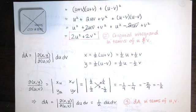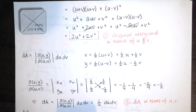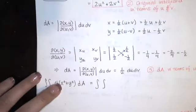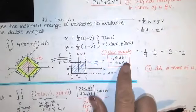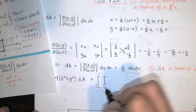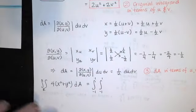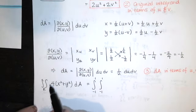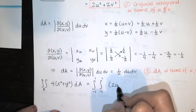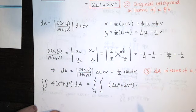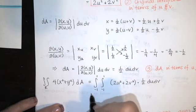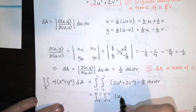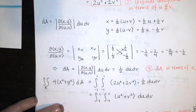Our double integral over R of 4 times x squared plus y squared turns out to be a new double integral. Both u and v range from negative one to one, so it doesn't matter which we integrate first. The integrand is two u squared plus two v squared, multiplied by dA which is one-half du dv. Distributing the one-half, the one-half times each of those twos gives ones, simplifying to the integral of u squared plus v squared du dv — a very simple integral to evaluate.